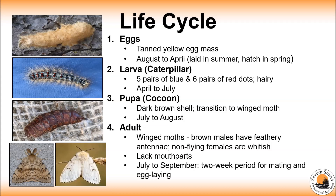The caterpillar stage is when gypsy moth is most destructive as it consumes leaves of trees and shrubs. In July and August the caterpillars usually move to a sheltered location to begin transforming into the winged moth. The pupa has a dark brown shell and in this stage they no longer feed on trees.